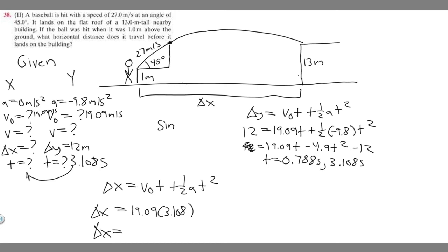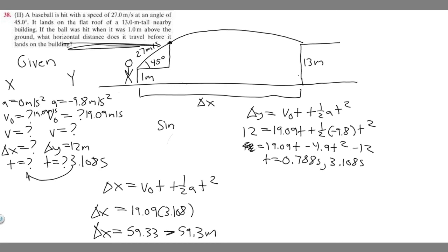Calculating that gives us 59.33. Since velocity is in meters per second and time is in seconds, delta x equals 59.3 meters. So the horizontal distance the ball travels before it lands on the building is 59.3 meters, and that's how you solve this problem.